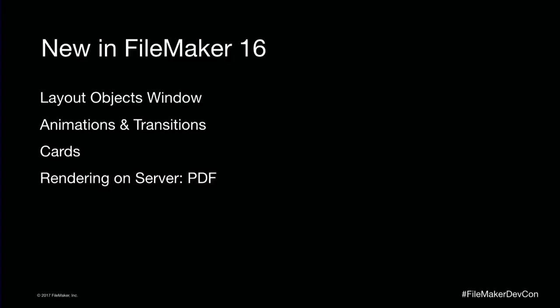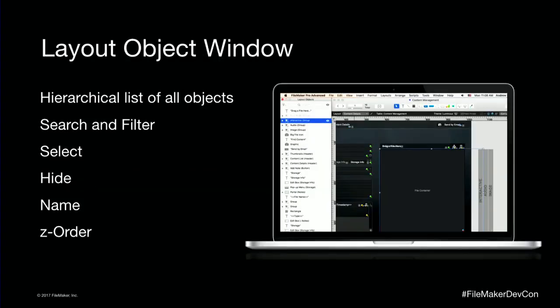Now I want to dig in and talk about FileMaker 16. The big things that have to do with layout in FileMaker 16 are the layout objects window, animations and transitions, card style windows, and rendering on server for the PDF feature. The layout objects window shows you your layout objects — the tree, the model. You don't see the views, so you only see each object once, even if it's showing up in multiple rows, multiple portal rows, or multiple list view parts.